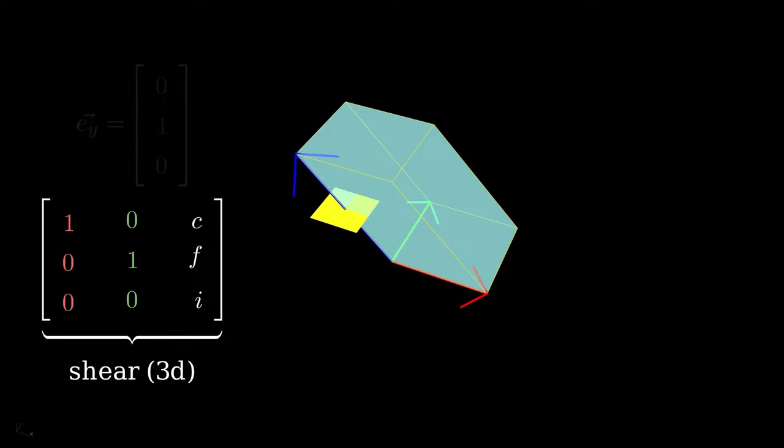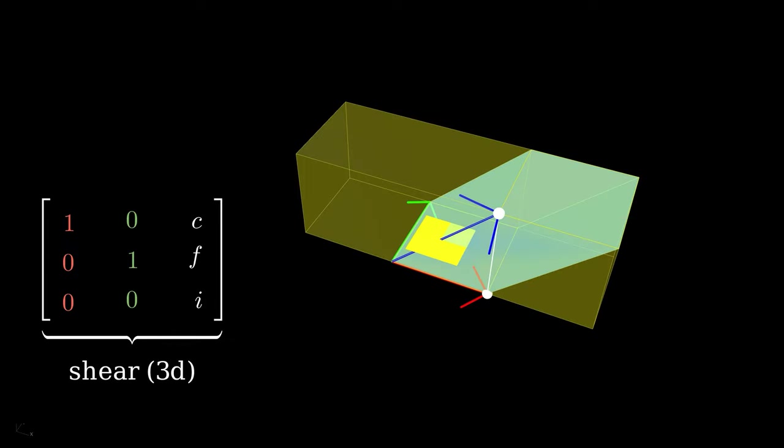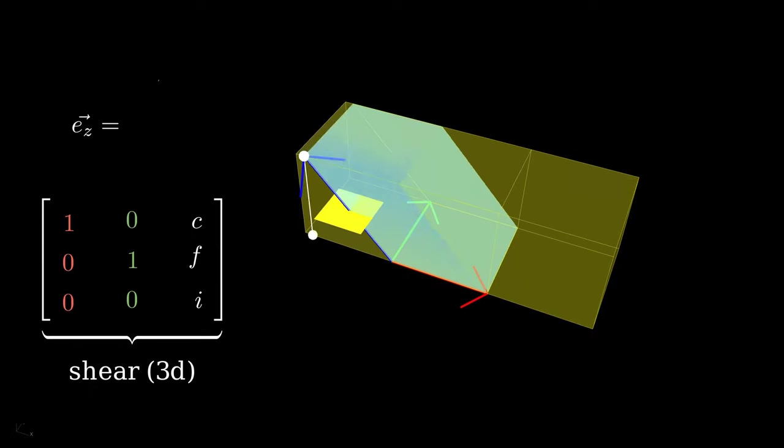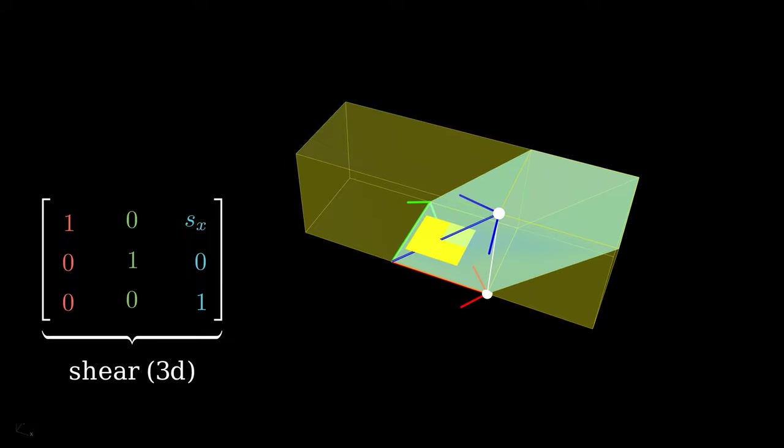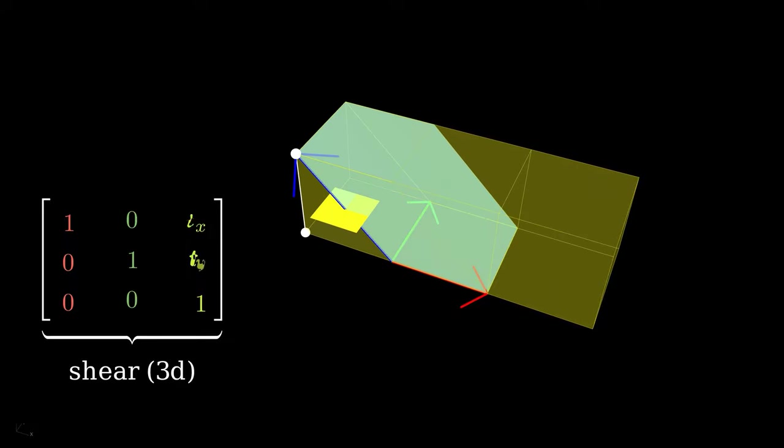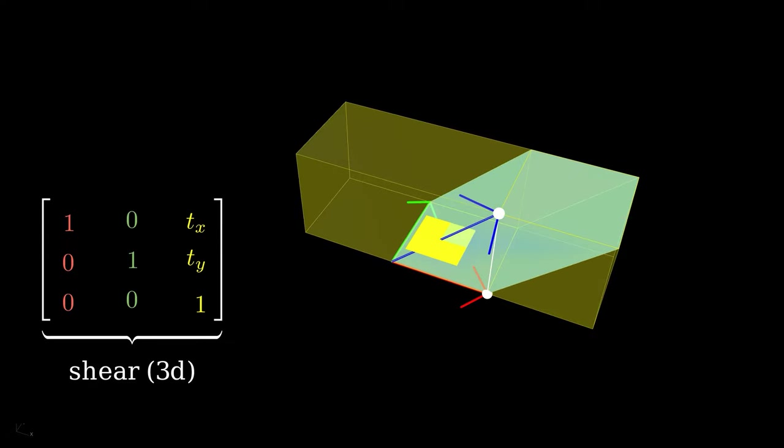We notice the height of this cube doesn't change and therefore the last digit of the third column is 1. And the cube has no Y axis shearing, so the second digit is 0. Now we can interpret the first and the second components of the third column are just moving the Z basis vector in the XY plane.